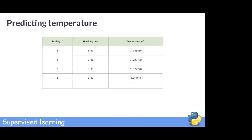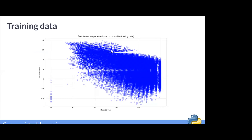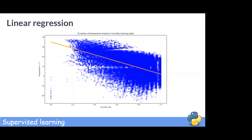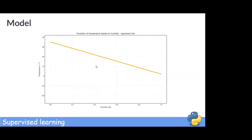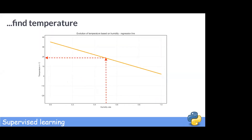Let's look at some new data: weather readings. Can we predict temperature based on humidity? We use 80 percent of the data to train our model. It seems like when humidity rises, temperature decreases. Indeed, our linear regression model catches that, making this a good model. According to our model, if the humidity rate is 0.5, then the temperature is 18.5 degrees Celsius. This is how the model performs on real data — it identifies the trend.